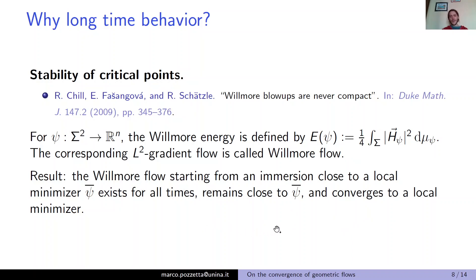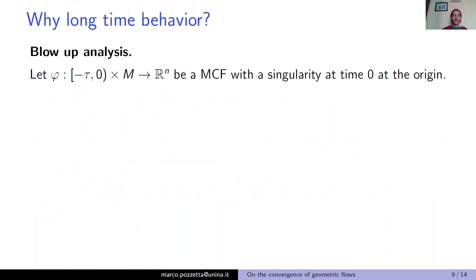So you have a flow that in general develops singularities, but critical points are in a sense stable: if you start with an initial datum close to them, you don't have singularities and you have long-time smooth convergence.